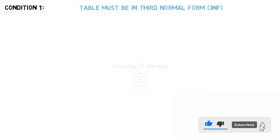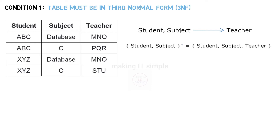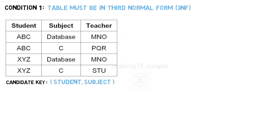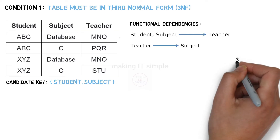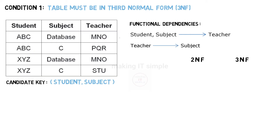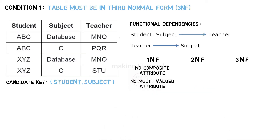Let us simplify these conditions using examples. Consider this table — no single attribute can identify a complete tuple, so the candidate key needs to be a combination. Using student and subject combined, we can determine teacher, so student and subject together form the candidate key. The functional dependencies are: student and subject determine teacher, and teacher determines subject, since one teacher teaches just one subject. This table does not have a composite attribute or multi-valued attribute, so it is in first normal form.